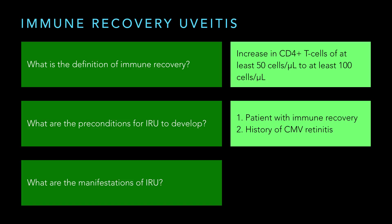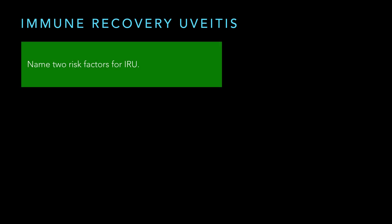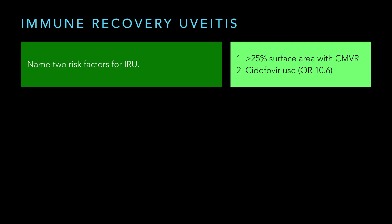What are the manifestations of IRU? The manifestations are anterior or intermediate uveitis — as simple as that. You don't get the original CMV retinitis again; we're talking about somebody with an iritis, basically a little intermediate uveitis. The two main risk factors for IRU are: greater than 25% surface area with CMV retinitis in the past, or use of Cidofovir. If you use Cidofovir, you're 10 times more likely to get IRU.